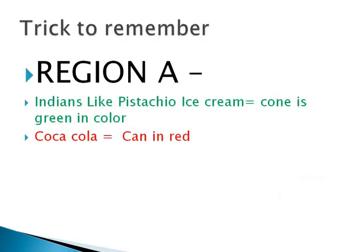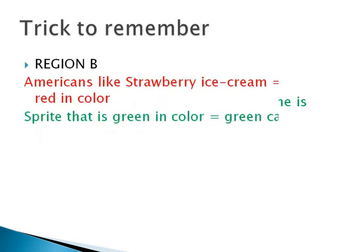Here are tricks to remember Region A and Region B. In Region A, when you see a cone, think of pistachio ice cream — the cone is green in color. And think of Coca-Cola — the can is red in color. For Region B, Americans like strawberry ice cream — so the cone is red in color — and Sprite, which is green in color, represents the green can.